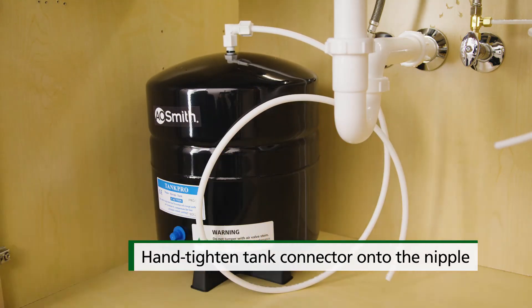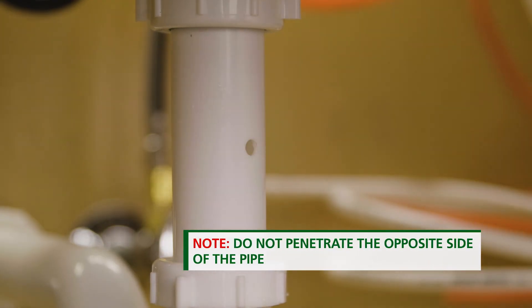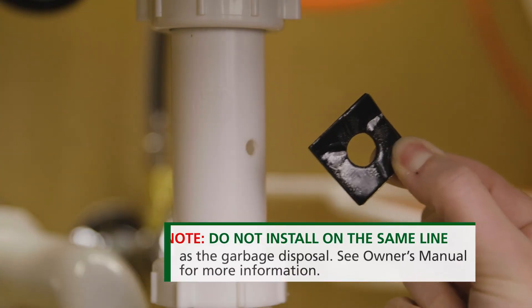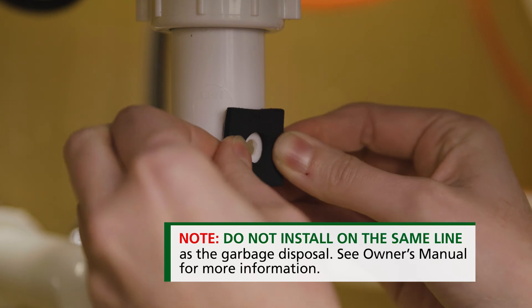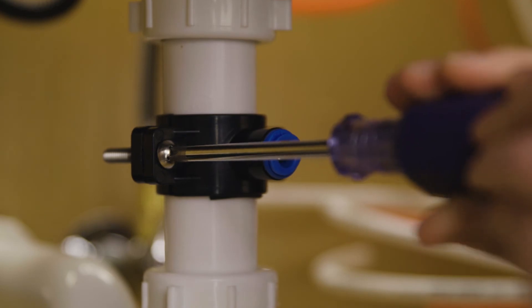Now we need to install the drain connector. Identify your drain location outlet. Drill a 7/32-inch hole on the drain pipe and position the drain connector on the sink drain above the drain trap. Remove protective cover from the back of the foam seal and attach to the front plate of the drain connector. Securely tighten nuts and screws.